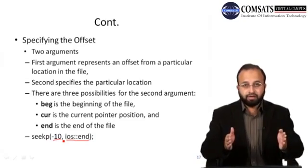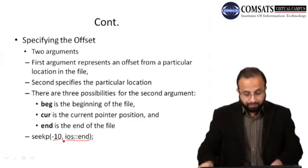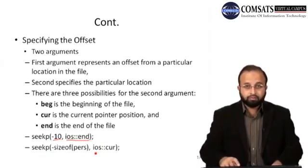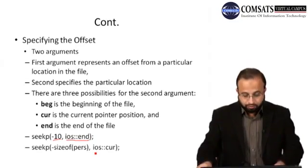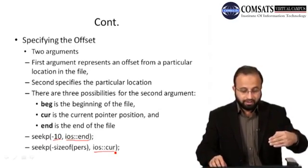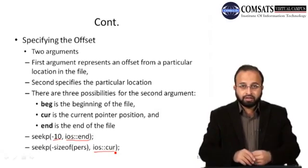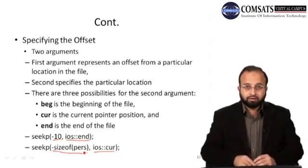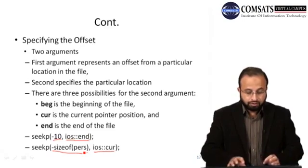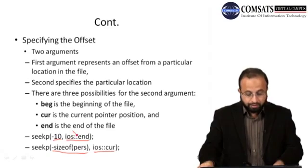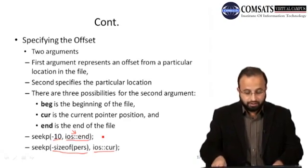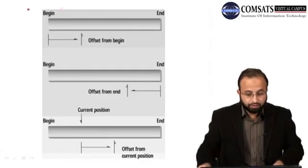After displaying the number of records, the program asks the user to enter a person number. The position is calculated as (n-1) × sizeof(person), and seekg is called to position the get pointer at that record's starting byte. The record is then read and displayed. For example, if there are three records (red=1, blue=2, green=3) and the user inputs a number, the corresponding record is retrieved.